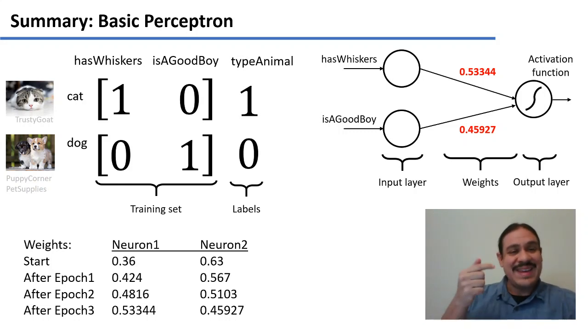We had two items, cat and dog. Each of them has a vector of features. The two features were has whiskers or not, for the cat is one and for the dog is zero, and is a good boy. For the cat is zero, jokingly, and for the dog it's one. So we have a training set which is vectors of features, and then we had labels for each of them. The cat was one, the dog was zero.